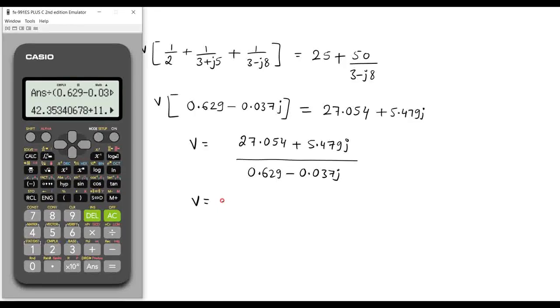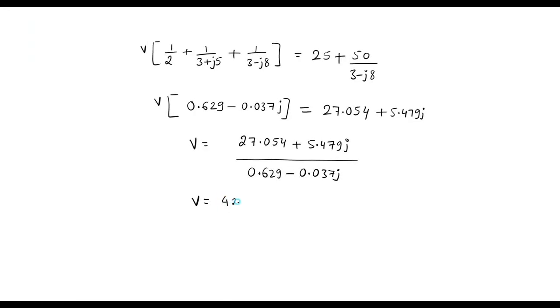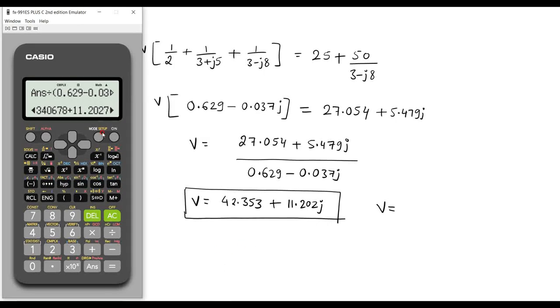Let me keep the result in polar form also. That is V is equal to, this in polar form. Go to the mode, choose compound mode. So here we have pole, so choose that option, polar of.